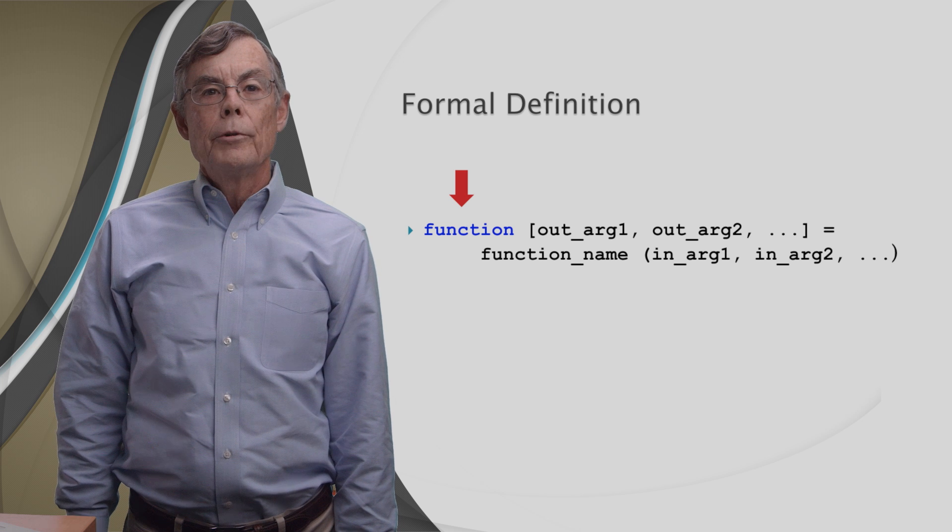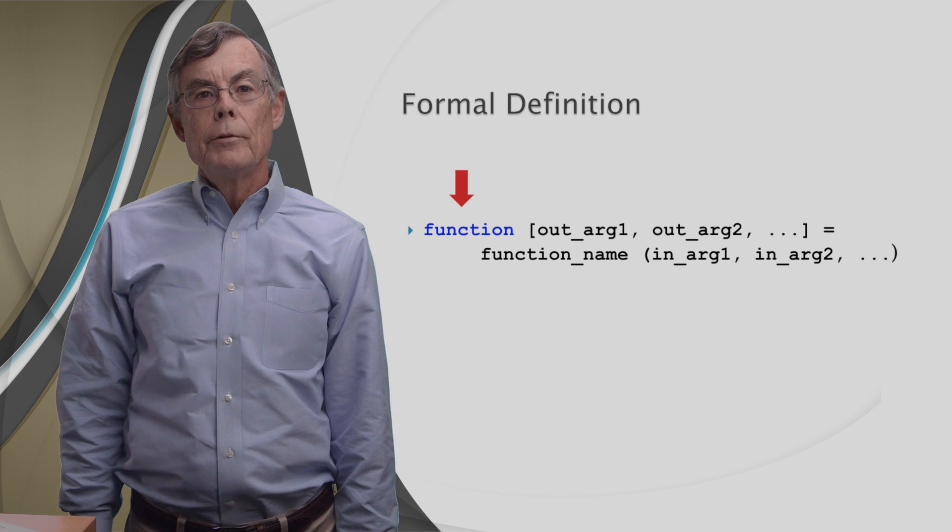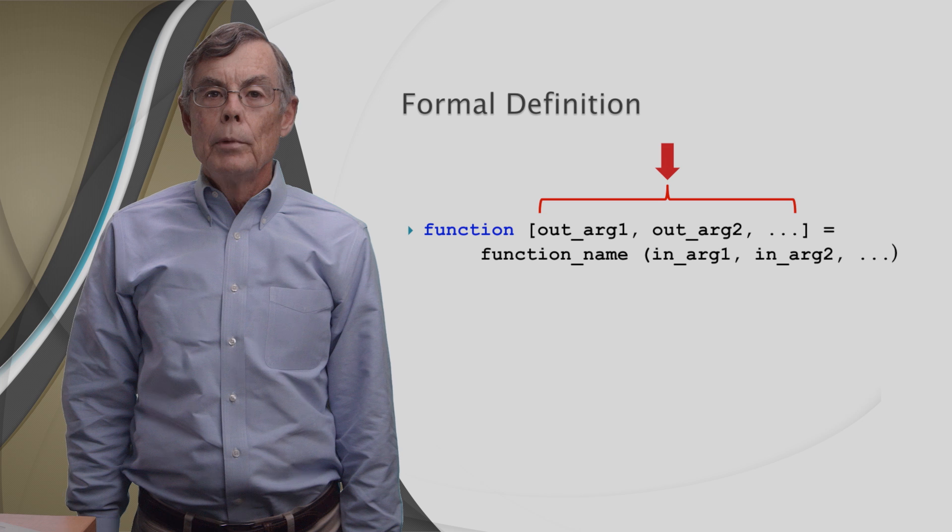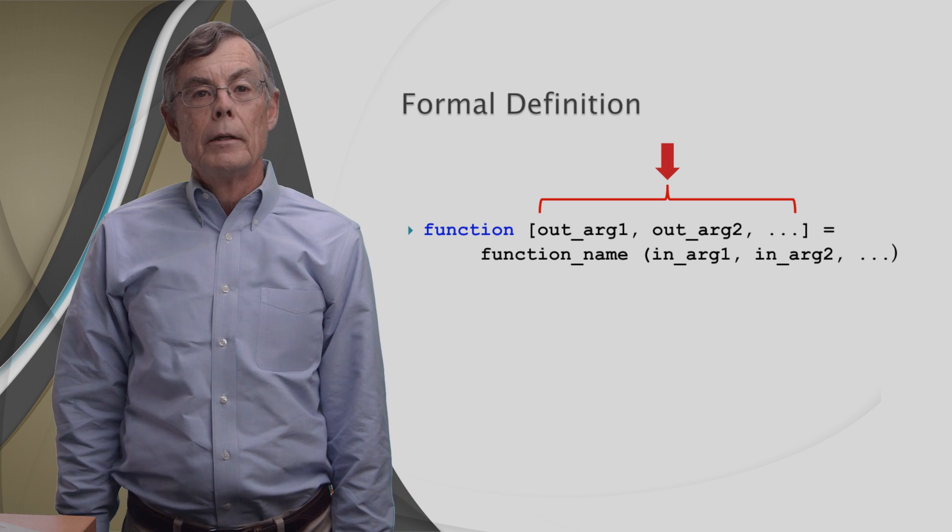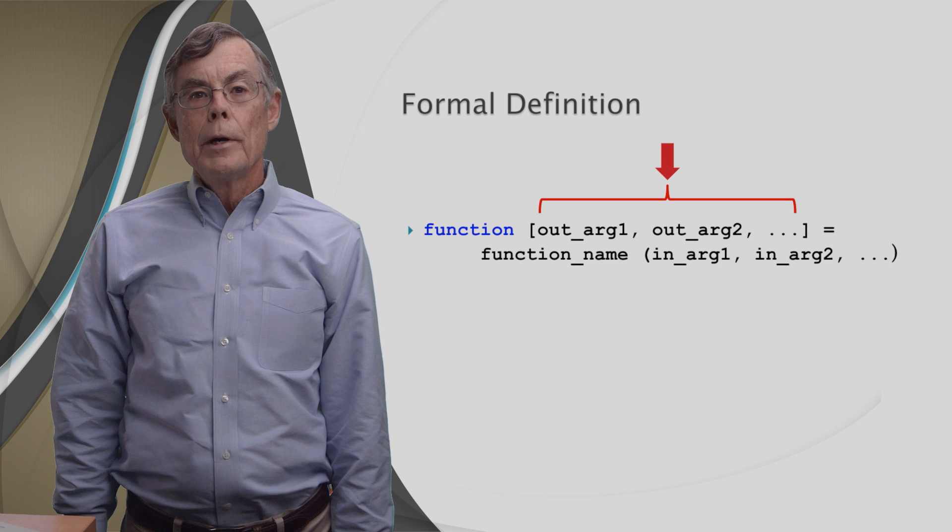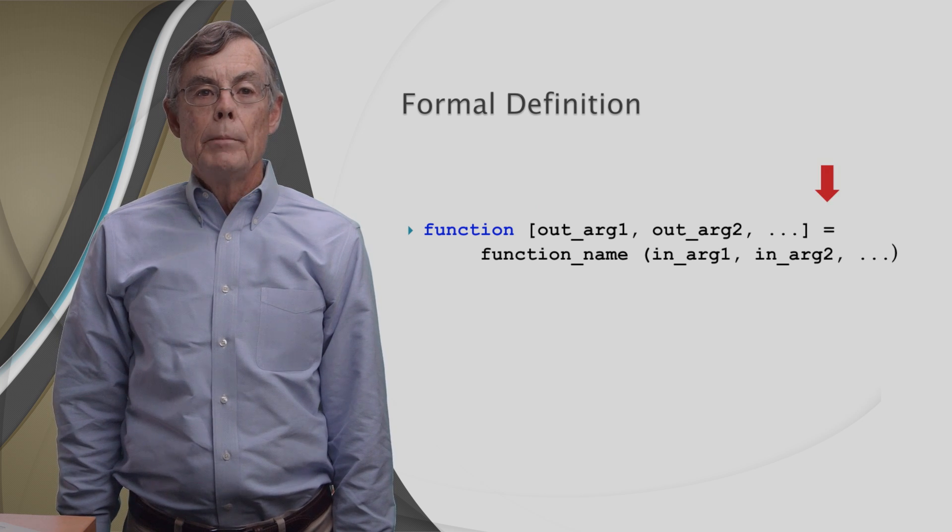The declaration starts with the function keyword, and to remind you that it's a keyword, MATLAB highlights it for you in blue. Then come the output arguments, if you have any. If you have more than one, the square brackets are required. Otherwise, they can be omitted.